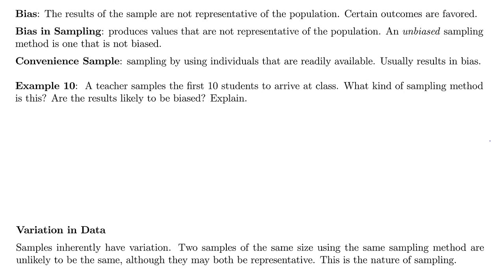Remember when we started sampling, our goal was getting a representative sample? Well, the opposite of representative is bias. Results in the sample that are not representative of the population are ones in which certain outcomes are favored over others. So instead of the sample having the same characteristics as the population, it has different characteristics. There are different reasons why outcomes could be favored — there are different types of bias.